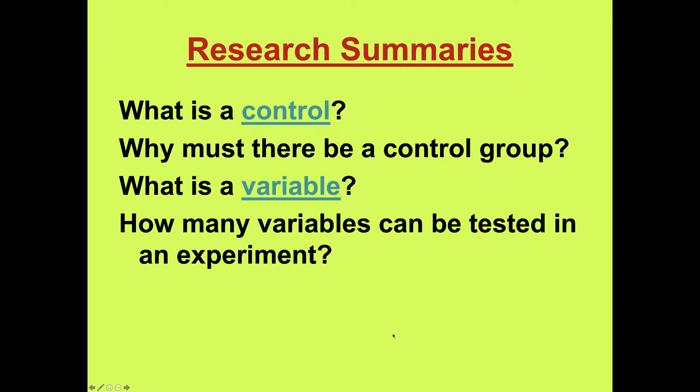What is a control? Why must there be a control group? What is a variable? How many variables can be tested in an experiment? A control is the standard group that is not changed or intervened with. The reason for the control group is that when you keep other things stable and only change one thing, you can compare the two groups directly and draw conclusions based on the data.